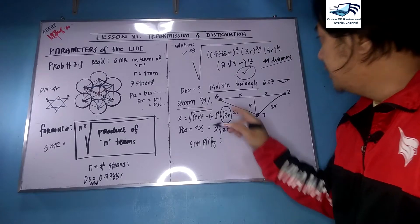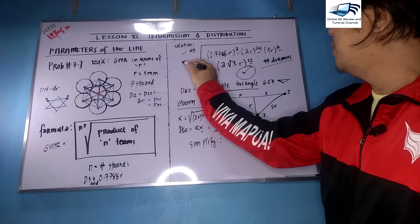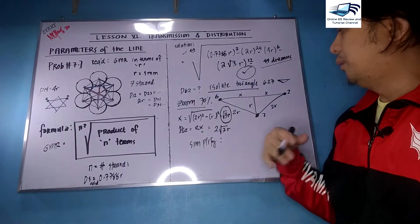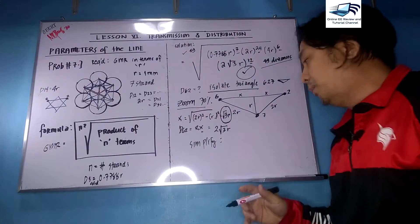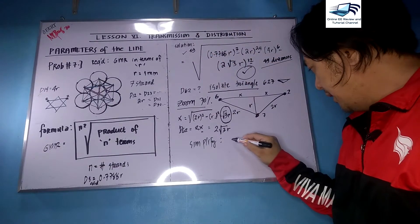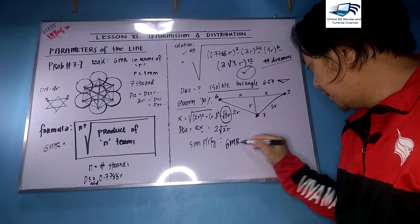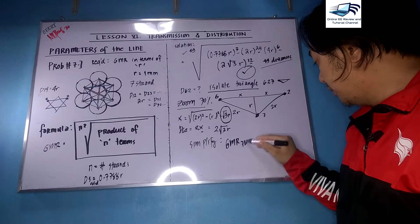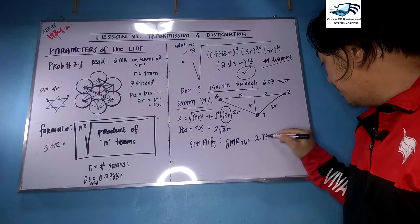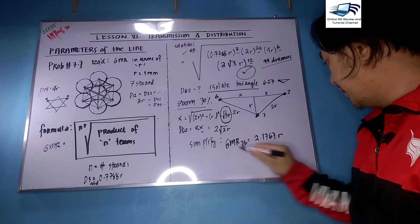What you will do now is simplify the 49th root in terms of r. After a little bit of algebra, the GMR of your seven-strand bundle in terms of r is 2.1767r.